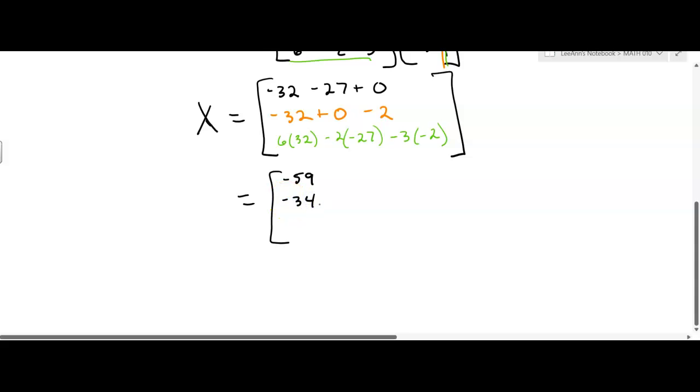So I'm just going to go 6 times 32. Well, first I'm going to turn my calculator around. 6 times 32 minus 2 times negative 27 minus 3 times negative 2. And I get 252.